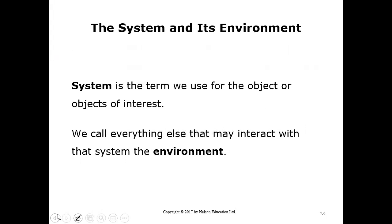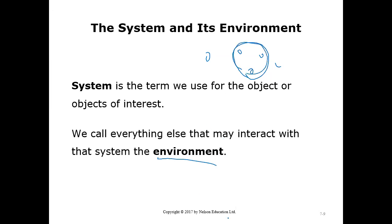Now we have to define 'system.' A system is the term we use for an object or collection of objects of interest. We choose which objects form our system and everything else is the environment. So: environment plus system equals the universe — everything.